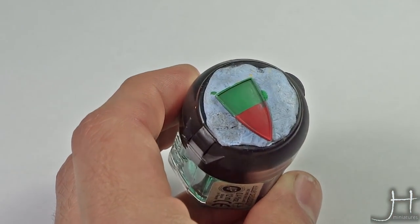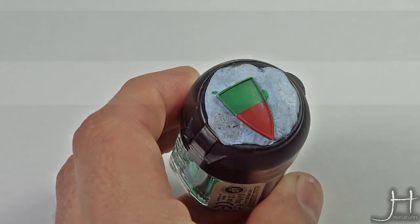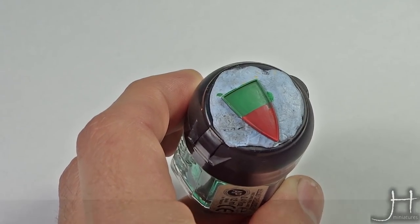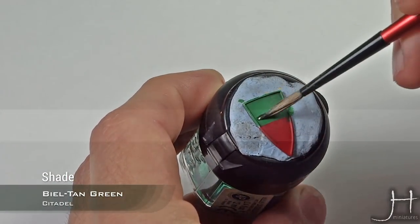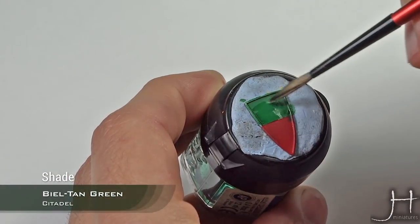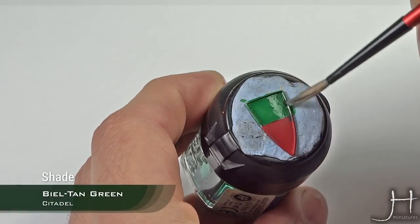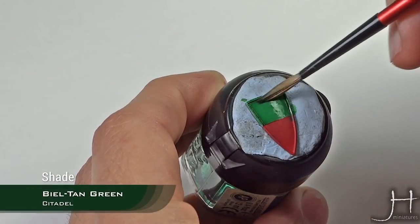Once the wash is dry we will apply a second coat. This time we'll do it more as a glaze so we want to cover all the green, nice and dark.